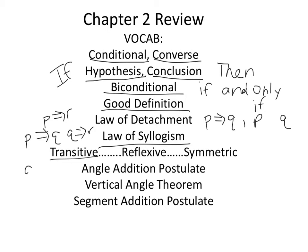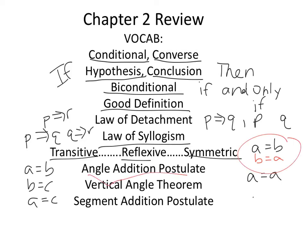Transitive property: if you know that A equals B and B equals C, then A equals C. It reminds me of the law of syllogism. Reflexive property is just A equals A, the exact same thing on the right and left side. Symmetric is when you reverse what's on the left side with the right side. Also make sure you know the angle addition postulate, the segment addition postulate, and the vertical angle theorem.